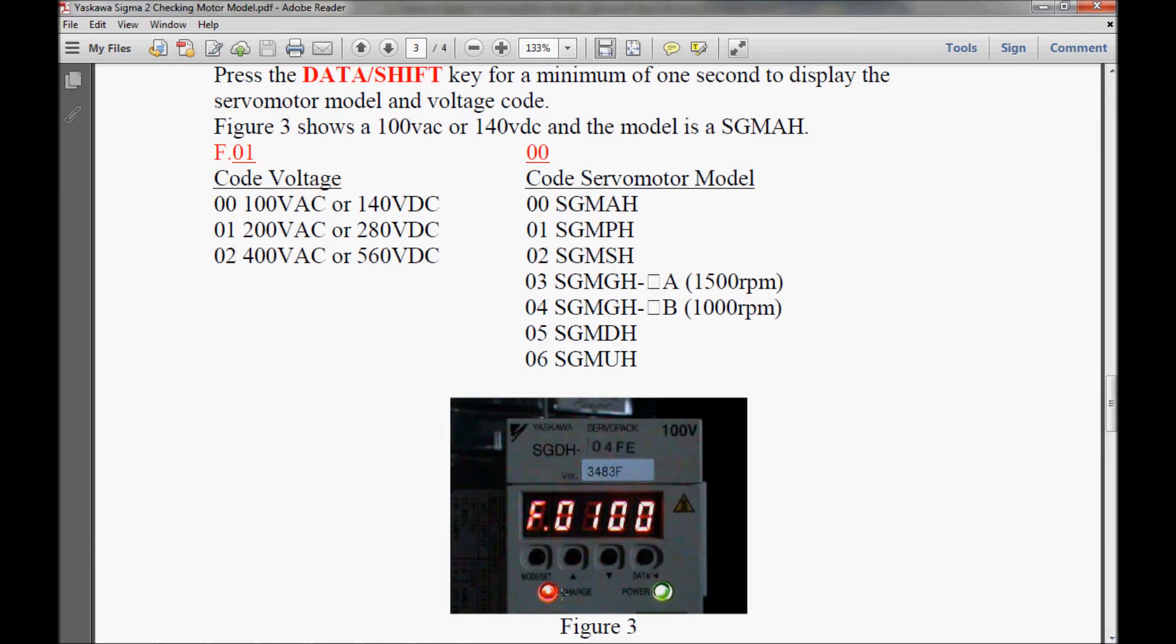In figure 3 here, I have a display of F.0100. So after the F.0, I have a 0.1. That is my voltage for the motor. So if I come over here to 0.1, that gives me a motor voltage of 200 volts AC or 280 volts DC. And then the next two numbers that I have here, 0, 0 in figure 3, give me a motor model of a SGMAH. So that seems simple enough.